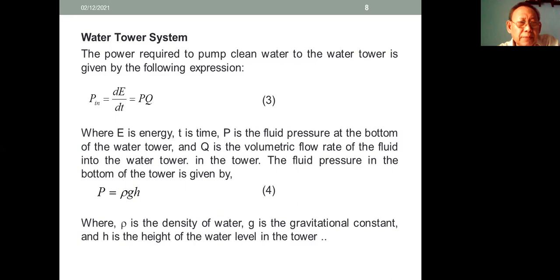Water tower system. The power required to pump clean water to the water tower is given by the following expression: P_in = P × Q, where E is the energy, T is time, P is the fluid pressure at the bottom of the water tower, and Q is the volumetric flow rate of the fluid into the water tower.